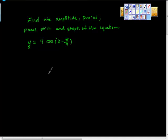Find the amplitude, period, phase shift and graph of the equation y equals 4 cosine of x minus pi force.